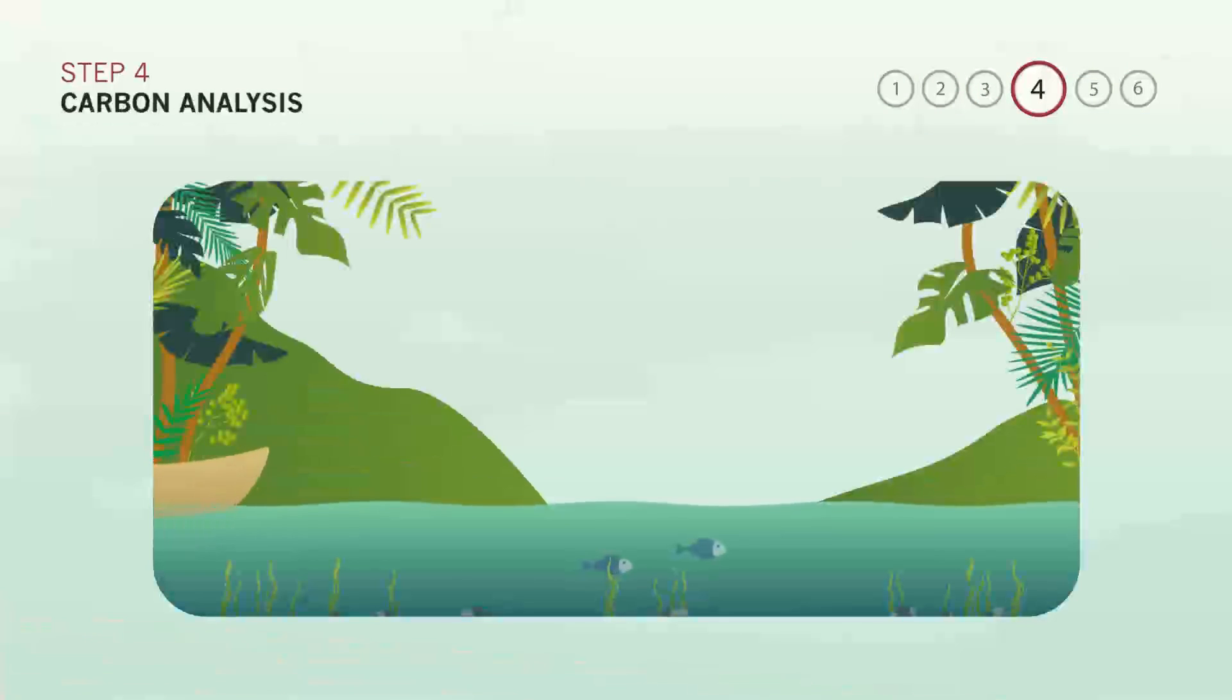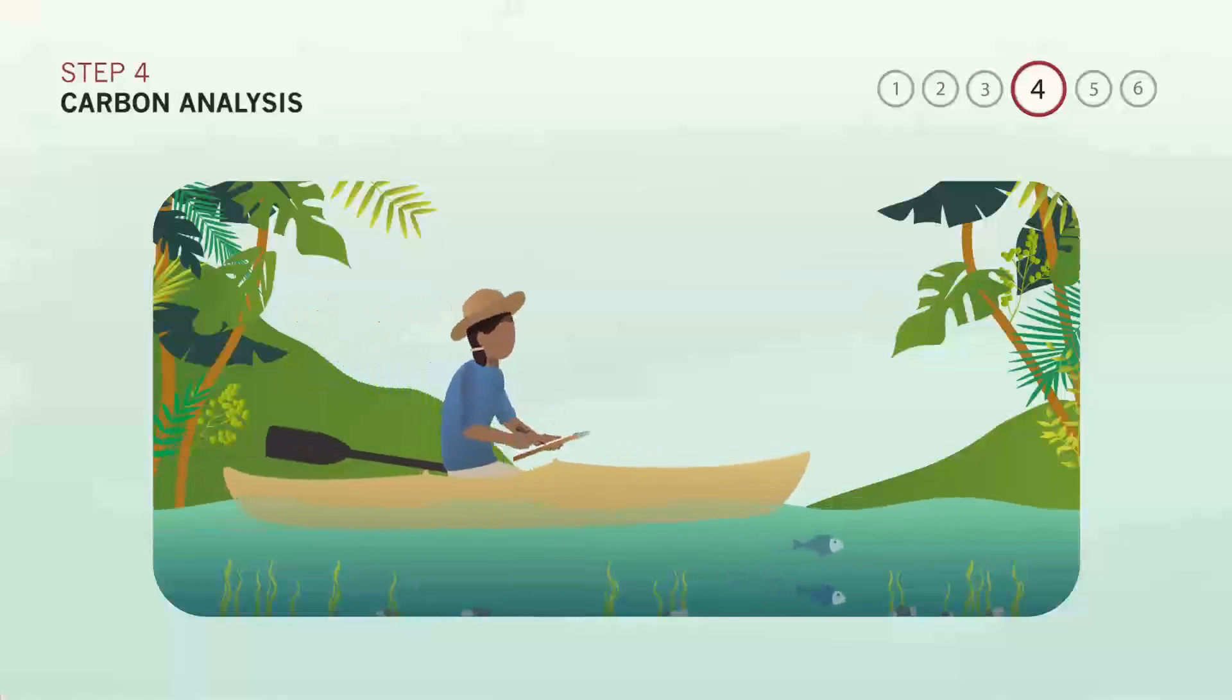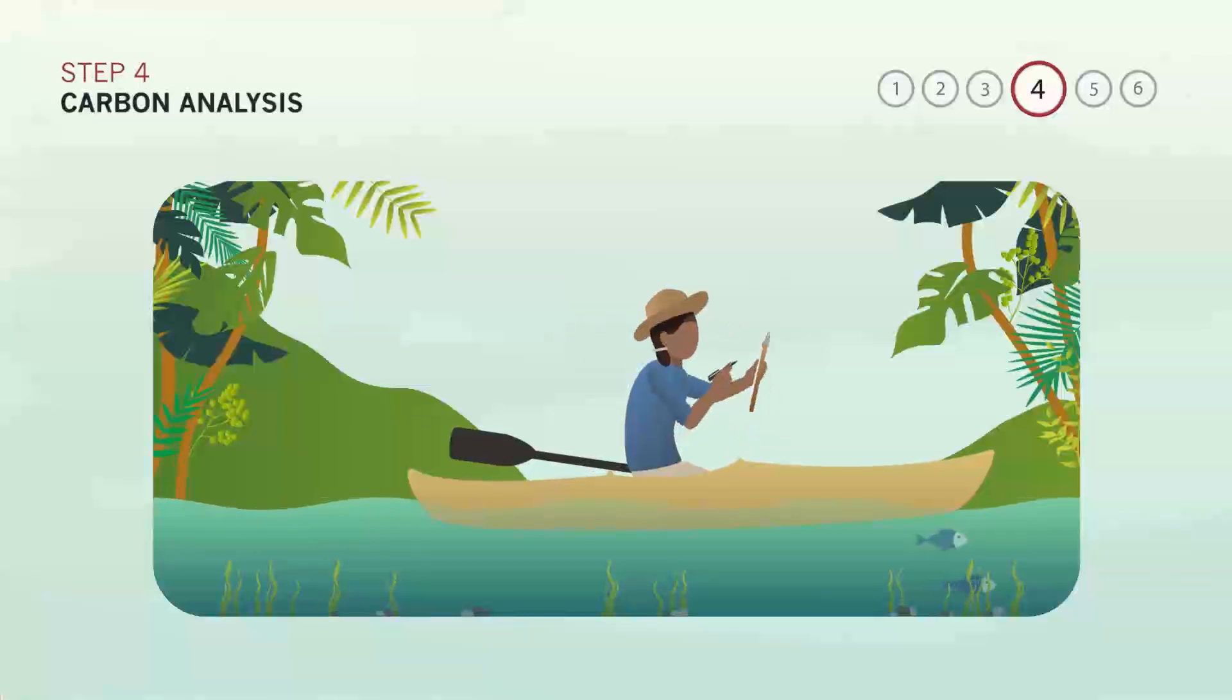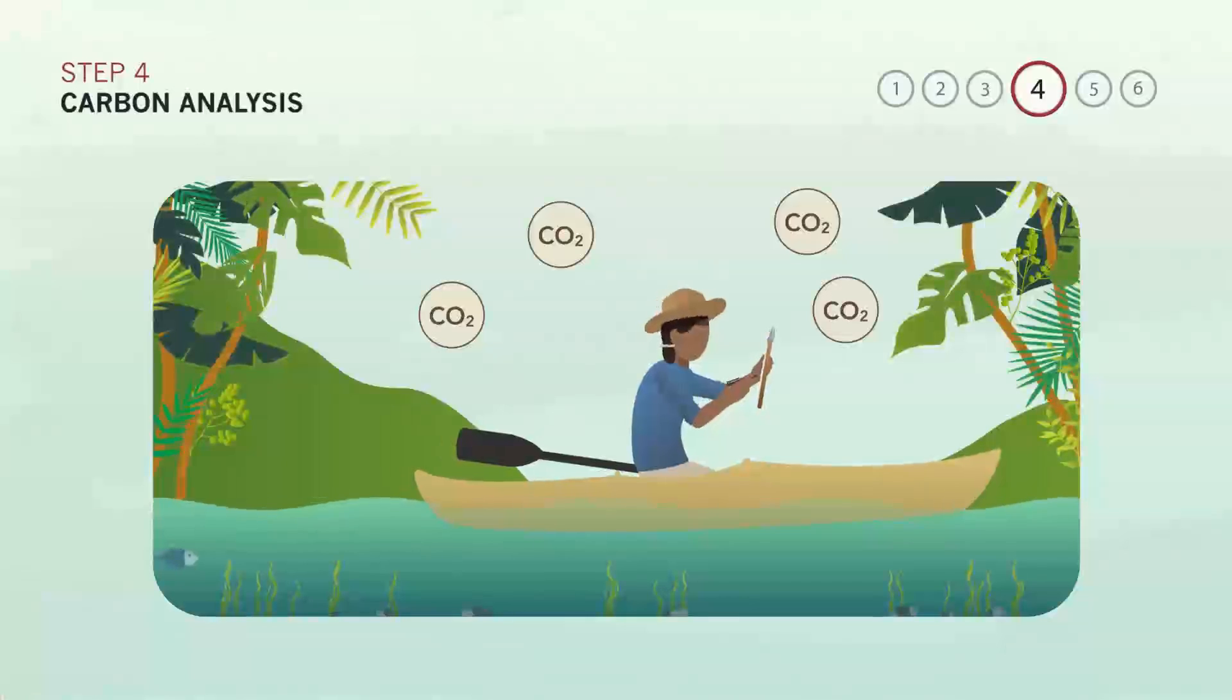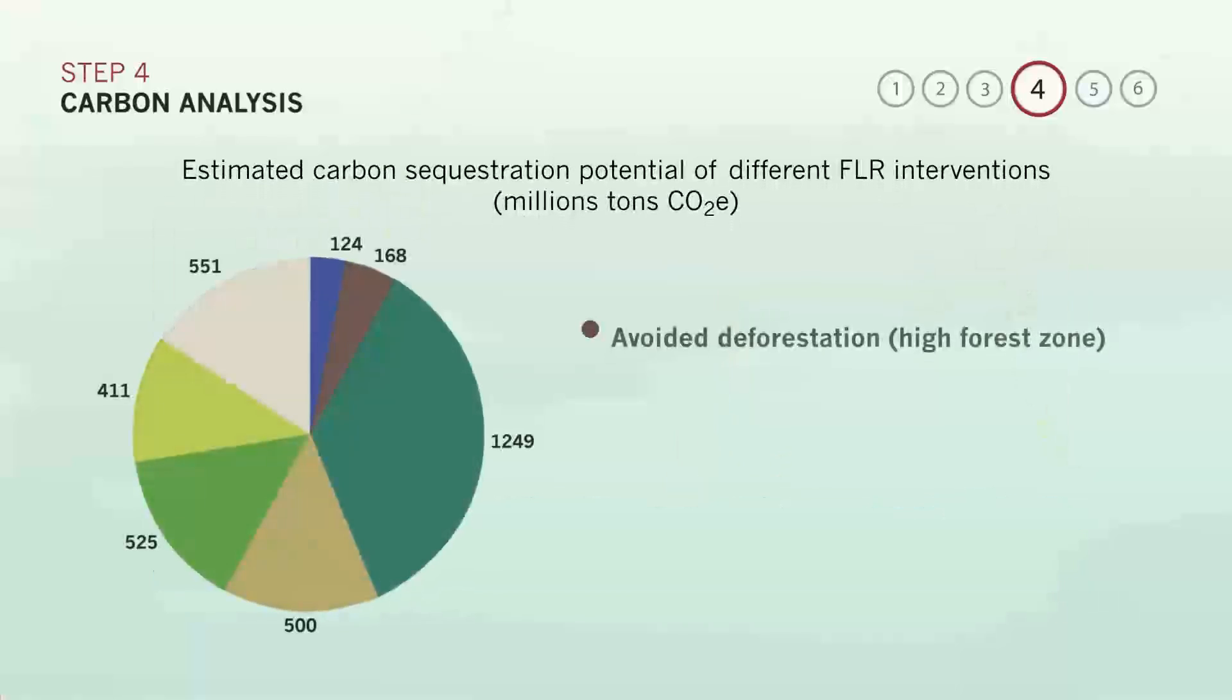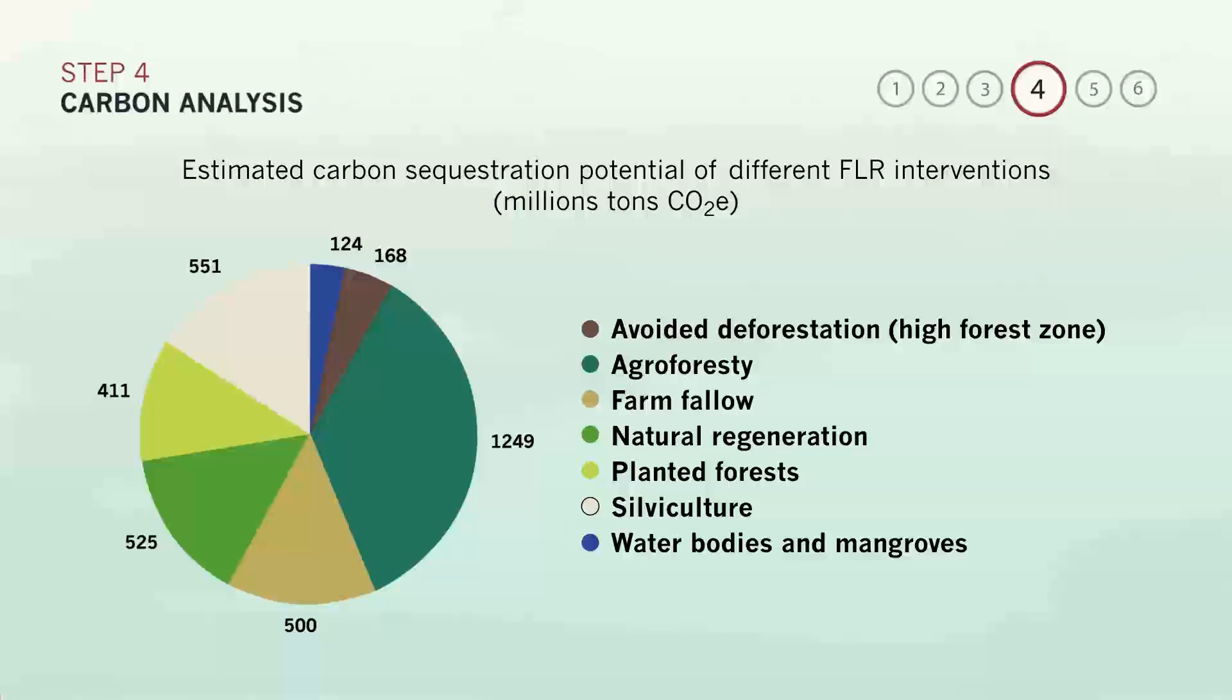Analysis 4: Restoration Carbon Modeling. The fourth analysis takes a deeper look at climate change benefits. Though an economic analysis will often consider the carbon sequestration benefits of restoration based on potential carbon pricing, it is useful to conduct a more thorough evaluation of the carbon sequestration potential of each restoration activity on your priority list. The Intergovernmental Panel on Climate Change offers several methods for calculating the sequestration potential from land use changes. Once you've calculated the mitigation potential of each restoration activity, you can use that data to inform policy decisions on land use change. This chart shows the carbon sequestration potential of various restoration interventions in Western Africa.